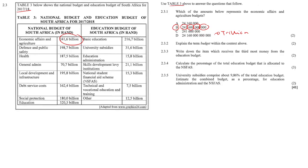Then hundreds, tens, and units. Question 2.3.2: explain the term 'budget' within the context above. A budget is basically a proposed way in which money will be spent on different items — it's a proposed method of allocating funds.